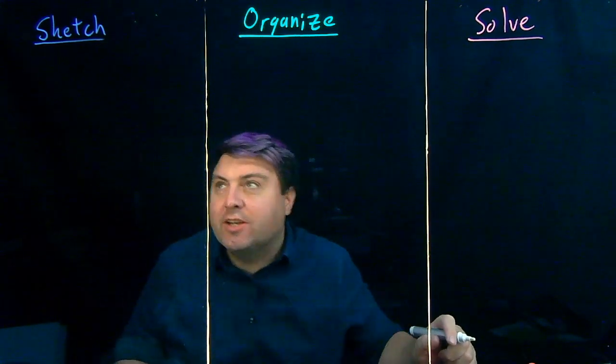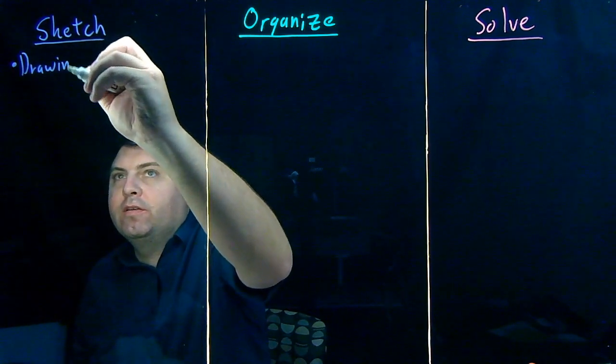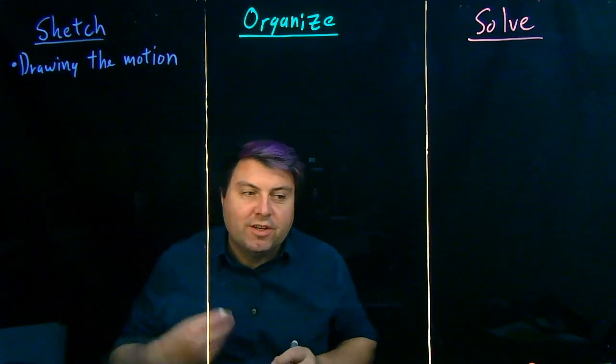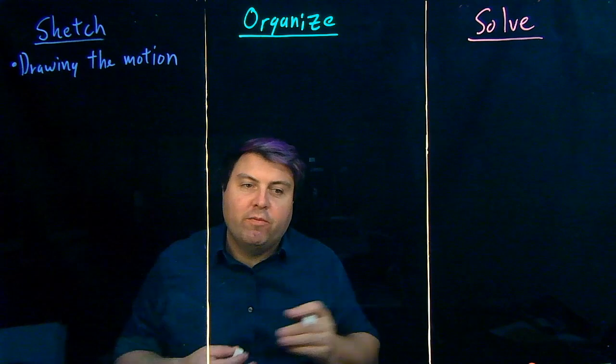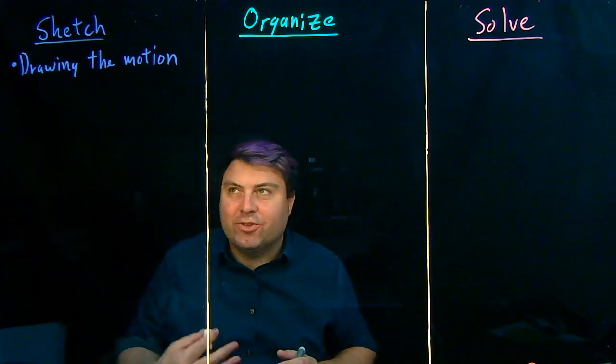So first we want to sketch what's going on, and we start by drawing the motion. We want to show what's going on, whether this is a motion diagram or a sketch or anything like that. It's your choice for how this goes.